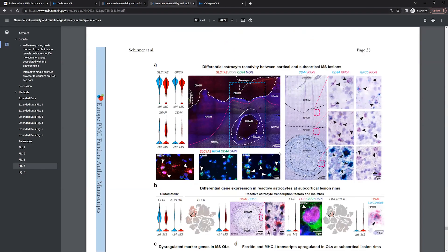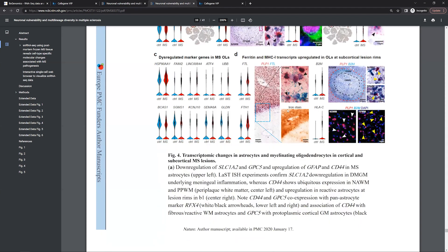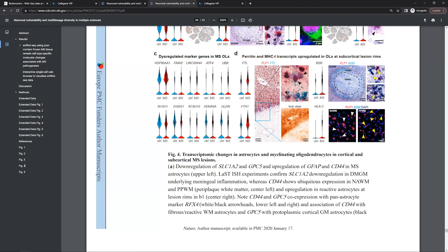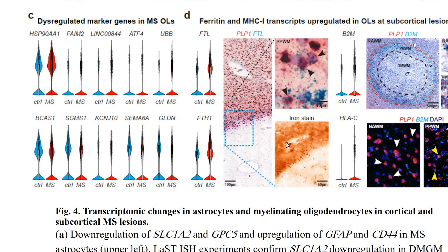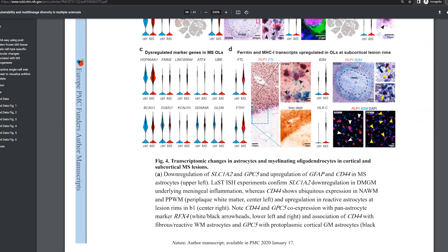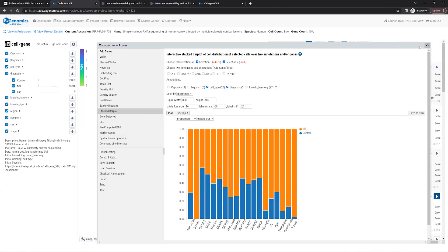Next, let's look at Figure 4D from the paper. The authors noted elevated ferritin levels in oligodendrocytes from MS patients, and these stress cells mapped strongly to iron-rich MS lesion rims. Both ferritin genes — light-chain FTL and heavy-chain FTH1 — were found to be highly expressed in MS oligodendrocytes. Now let's try to reproduce this observation using Cell-by-Gene VIP.